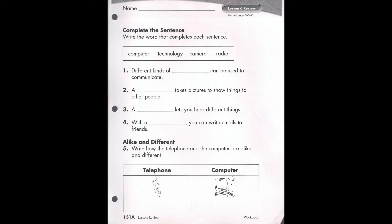Now we have something called a like and different. We have to write how the telephone and the computer are alike and how they are different. Write one thing that makes them alike, and one thing that makes them different. If you don't have the sheet printed out, write down number 5, then write one similarity and two differences for each — the telephone and the computer. Best of luck, grade 1. Have lots of fun, and I'll see you next time. Bye!